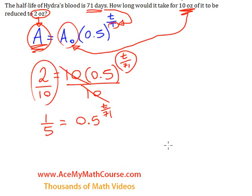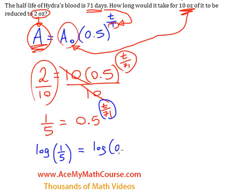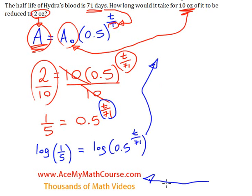What I'll need to do is take the logarithm of both sides of the equation. So I'll take the logarithm of the left-hand side. And why am I doing this? Because then I can bring down the exponent — log of 0.5 to the power of t over 71. Of course, I'm assuming you are comfortable with log rules. If not, visit our website and check out our videos on logarithms.